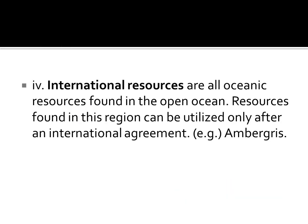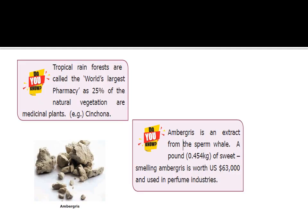International resources are all oceanic resources found in the open ocean. Resources found in this region can be utilized only after an international agreement — for example, ambergris. Do you know? Tropical rainforests are called the world's largest pharmacy as 25% of the natural vegetation are medicinal plants, for example, Cinchona. Do you know? Ambergris is an extract from the sperm whale. A pound (0.454 kg) of sweet-smelling ambergris is worth US$63,000 and is used in the perfume industry.